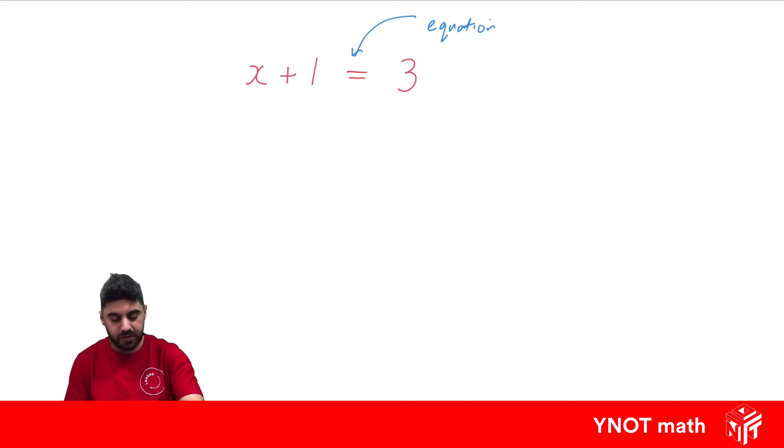If it was something like before, like we were just looking at 2x plus x, that's what we call an expression because there's no equal sign. Expressions can only be simplified, but equations can be solved.